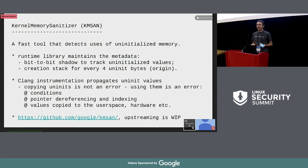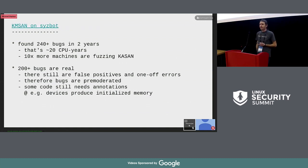Right now this code lives on GitHub. I've sent some RFC patches upstream, but it will take some time to actually land them. We've integrated KMSAN with Syzbot, a fuzzing infrastructure developed at Google. Within two years it has found more than 240 bugs in a very modest setup — we've been using like 10 machines for that.